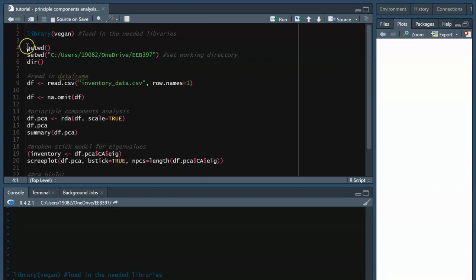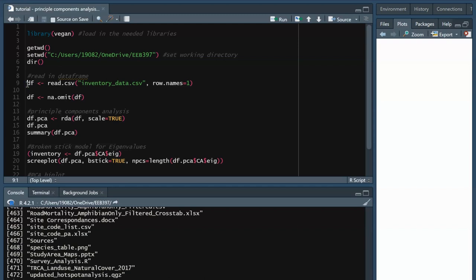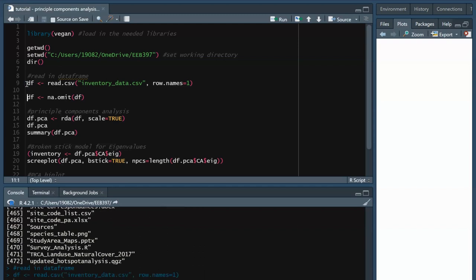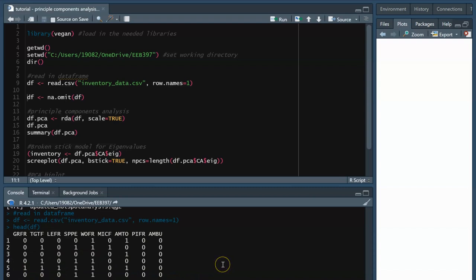Let's read in my data. My data is a presence-absence matrix of different species of frogs at different sampling sites. The file is called inventory data as we are looking at species inventory. Note that after the name of the file, we write row.names equals 1. This is because our data is a matrix, so the first column contains our row names, which are a bunch of different sampling sites. For each sampling site, we have the presence-absence, denoted by a 1 or 0, of each species of frog. Our objective is to see how the presence of certain species relate to each other across different sites.